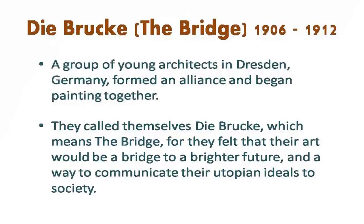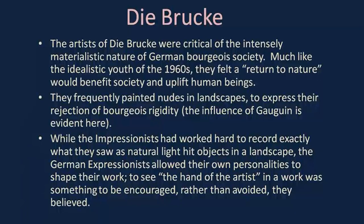One group is known as Die Brücke — in English, 'the bridge' — and the other is Der Blaue Reiter — in English, 'the blue rider'. Die Brücke as a group lasted from 1906 to 1912 and was a group of young architects in Dresden, Germany. They formed an alliance and began painting together, calling themselves Die Brücke because they felt their art would be a bridge to a bright future and a way to communicate their utopian ideals to society.